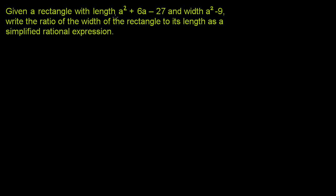Given a rectangle with length a squared plus 6a minus 27, and width a squared minus 9, write the ratio of the width of the rectangle to its length as a simplified rational expression.